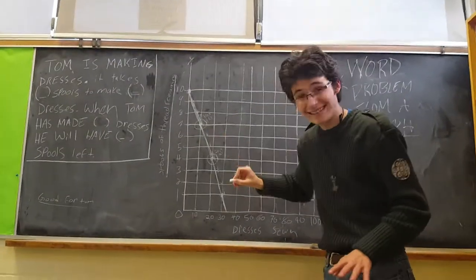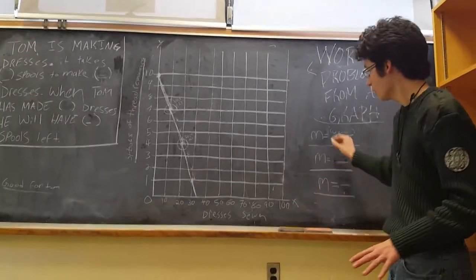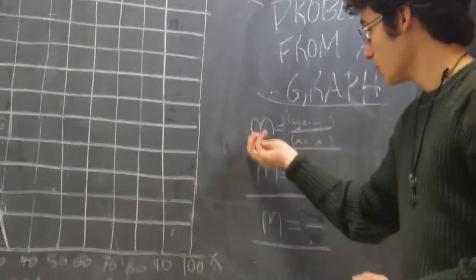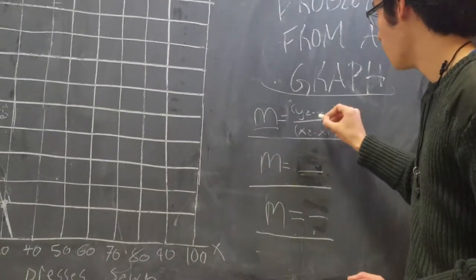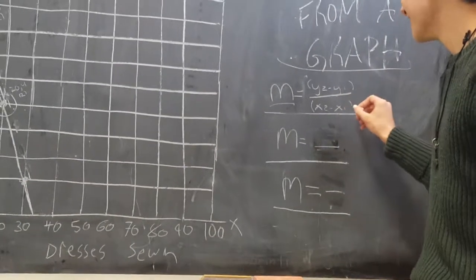For me, I chose 10, 7, and 24. Now, over here you have the slope equation, which is m, which represents the slope, equals y2 minus y1 over x2 minus x1.